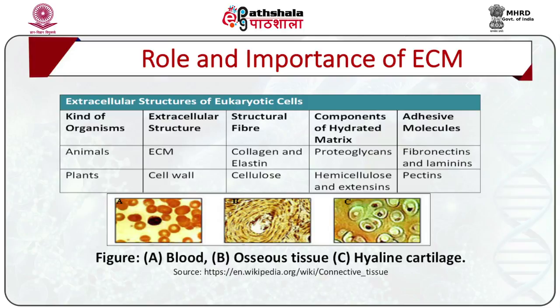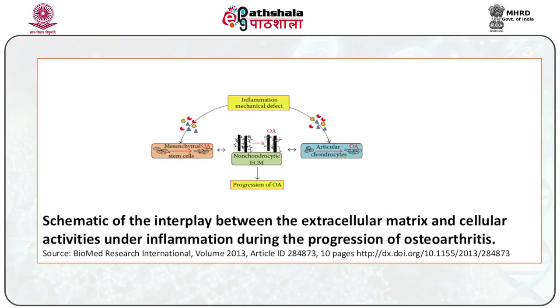It is secreted by local cells and organized into association with cell surface protein interactions. Variations in composition are suited to perform different functions — in blood, the ECM is referred to as plasma and fibers are generally absent; it can be deposited with calcium salts to form solid structures as in bones, or packed with fibers to provide tensile strength to cartilage. Recent studies report that rapid turnover and atypical composition of ECM along with inflammatory cytokines and proteases are major contributors to osteoarthritis.